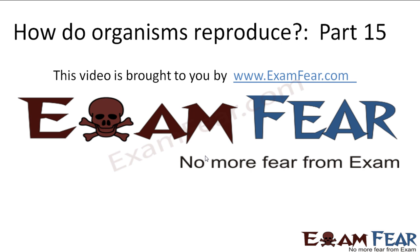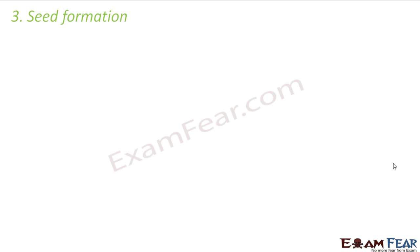This video on how do organisms reproduce, part 15, is brought to you by examfier.com. The third step is seed formation. Seeds are something we are all aware of — you buy seeds from the market, put them under soil, and a new plant comes out. That means the seed has the capability to give rise to a new plant. That seed is the result of sexual reproduction in plants, where a zygote is first formed.